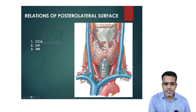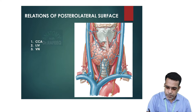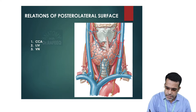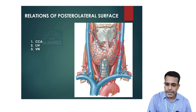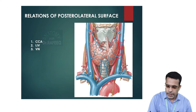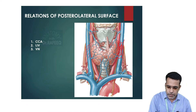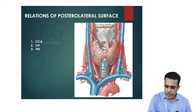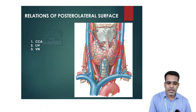The posterolateral surface of the thyroid gland is related to the carotid sheath and its contents. The carotid sheath contains three structures: the internal jugular vein, the common carotid artery, and the vagus nerve. These are present on either side, related to the posterolateral surface of both the right and left lateral lobes.